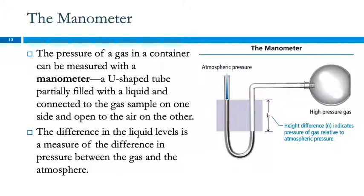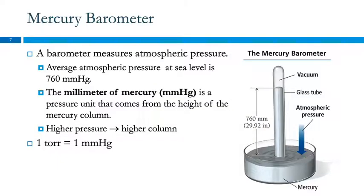Why use mercury instead of water? Mercury is much denser. One atmosphere of pressure supports a mercury column 760 millimeters tall — about 29.92 inches. If you made a barometer with water, it would have to be 30 feet tall and wouldn't fit in the room. That's why mercury is so practical. In fact, until recently each classroom had a mercury barometer on the wall, but people worried about it, so they had to take them down.